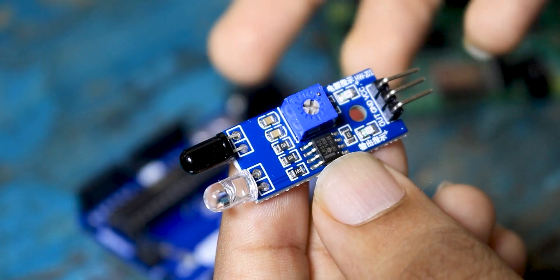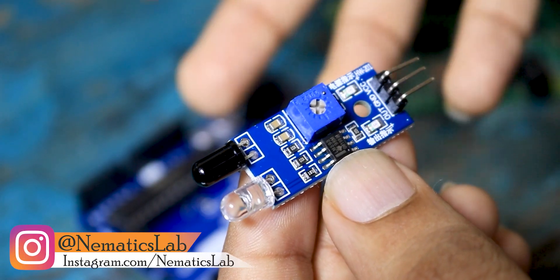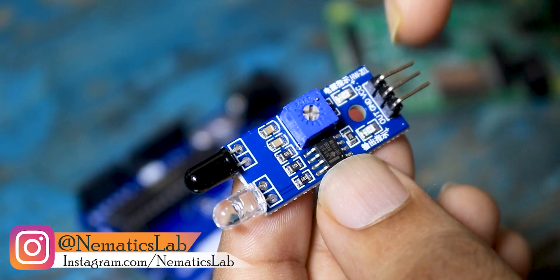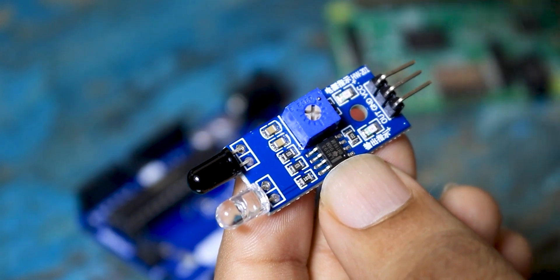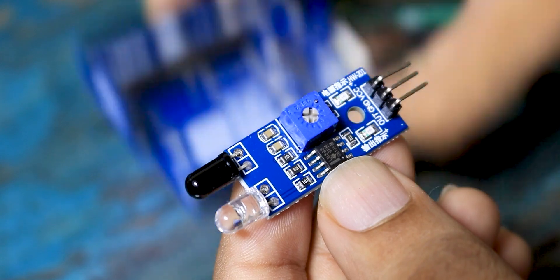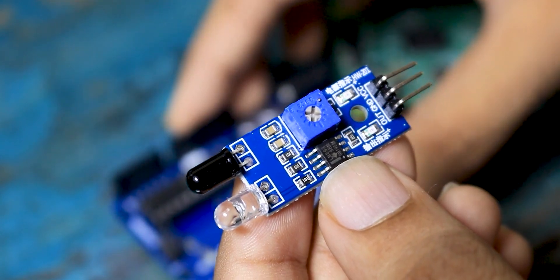But how does it work? This is the IR sensor which we will be using in our project. So this thing has 3 pins, VCC, GND and the output. VCC connects to the 5V, GND to the GND and output we will connect it to the digital pin of the Arduino. So we can detect the data.